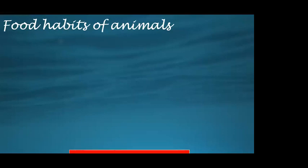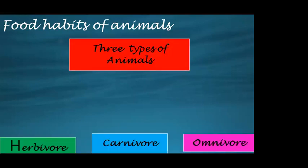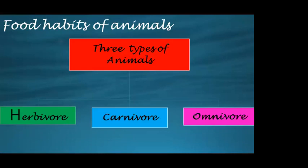Different animals eat different kinds of food. Their body parts are adapted to the kind of food they eat. Mouths of various animals are adapted in such a way that it suits their eating habits.